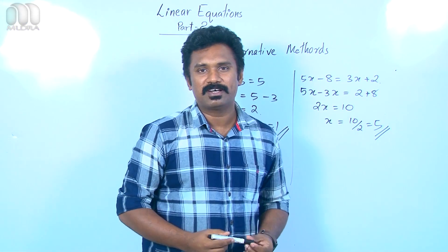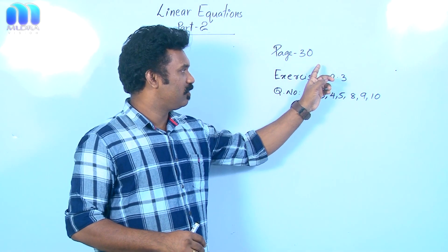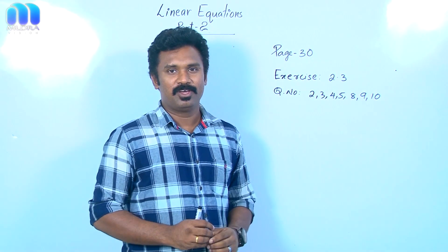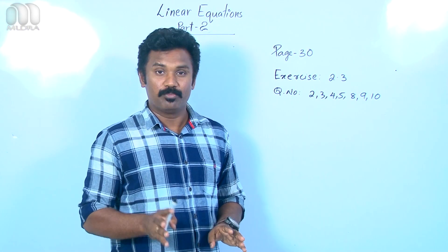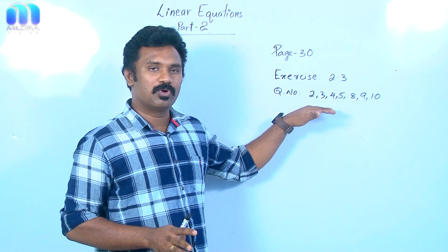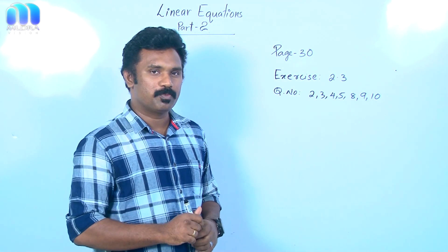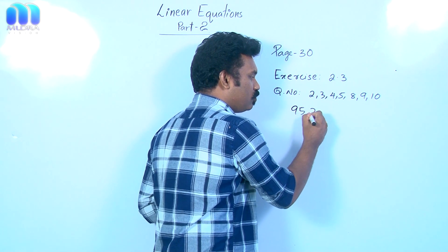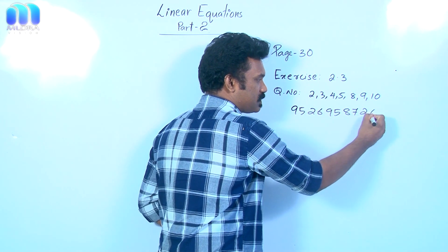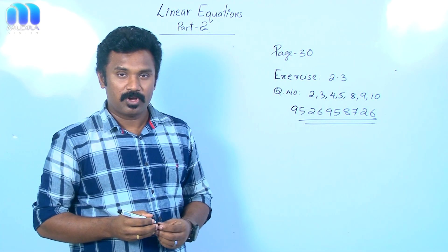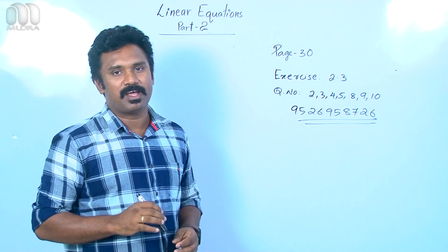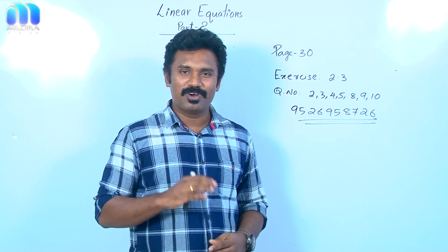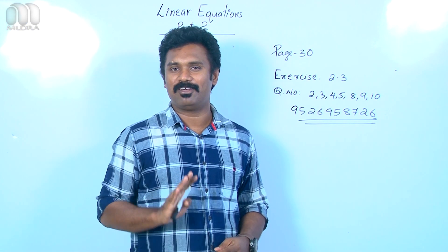I am going to give you some more work. In your textbook, go to page number 30 and find exercise 2.3. In exercise 2.3, try questions 2, 3, 4, 5, 8, 9, and 10 yourself using both methods. Try to solve all these questions and send me the answers through WhatsApp or you can call. If you have any doubt, you can call me directly at 9526958726. Otherwise you can send me the question through WhatsApp and I will solve it and send you back. You have to practice well — if you practice well, you will become an expert and can do problems very easily, effectively, and fast.